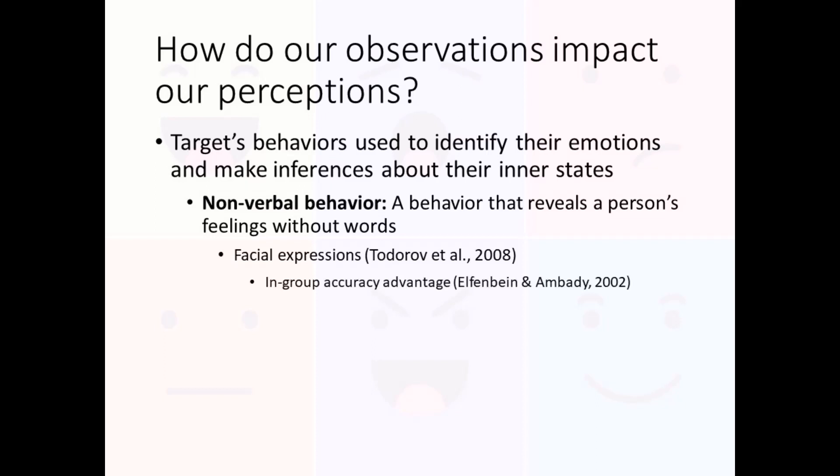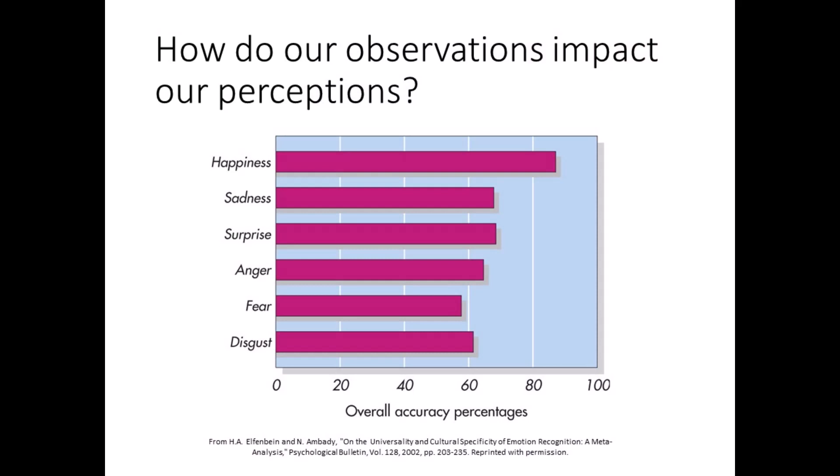In the early 2000s, Elfenbein and Ambady studied the universality and cultural specificity of emotion recognition. They asked people from all over the world to look at photos of facial expressions and identify the emotion being expressed. The results are shown here. Their study suggests that across cultures, people are able to accurately identify six primary emotions from others' facial expressions: happiness, sadness, surprise, anger, fear, and disgust. Note that we are best at identifying happiness from facial expressions — a smile means the same thing in the US as it does in the rest of the world.